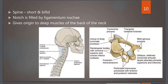The spine is short and bifid, and the notch is filled with ligamentum nuchae. All the spines give attachment to a structure called ligamentum nuchae, and also give origin to deep muscles of the back of the neck.